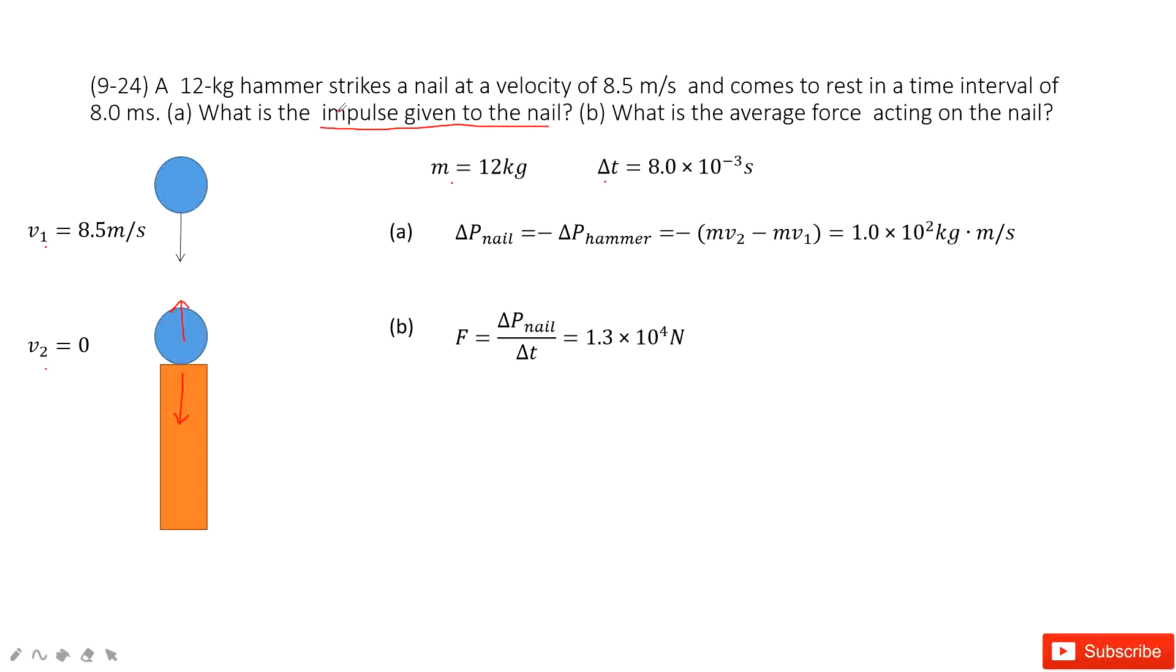So that means the impulse on the nail just equals the negative impulse of the hammer. Do you agree? Because impulse is force times delta t, the force is equal, just with the direction opposite.